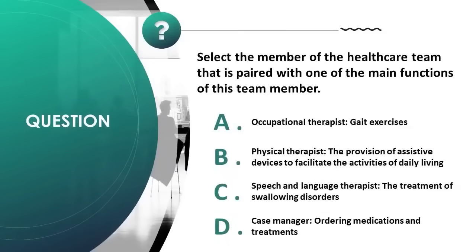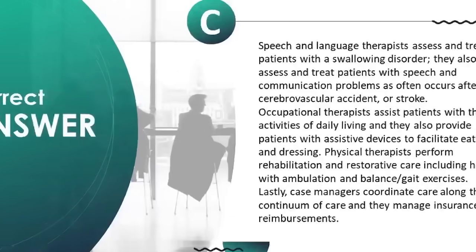Match the healthcare team member with one of their main functions. A) Occupational therapist — gait exercises. B) Physical therapist — provision of assistive devices to facilitate activities of daily living. C) Speech and language therapist — treatment of swallowing disorders. D) Case manager — ordering medications and treatments. Correct answer is C.